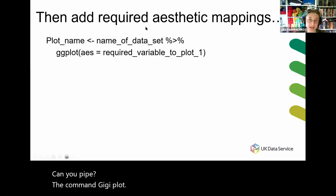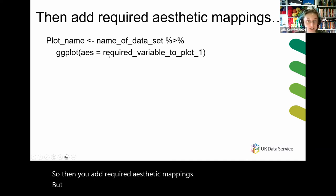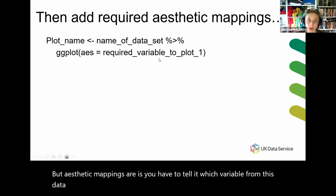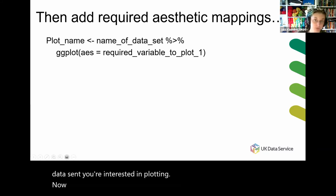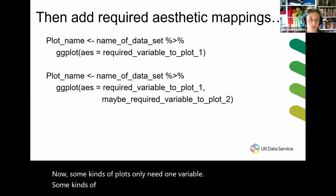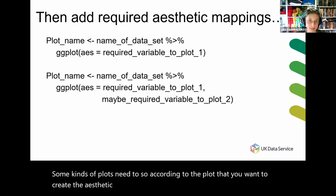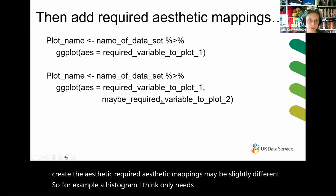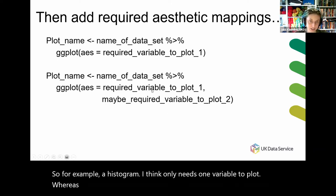You then add required aesthetic mappings. Aesthetic mappings are where you tell ggplot which variable from the data set you're interested in plotting. Some kinds of plots only need one variable, and some need two. So according to the plot you want to create, the required aesthetic mappings may be slightly different. For example, a histogram only needs one variable, whereas a scatter plot needs two — they each have different required aesthetic mappings.